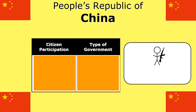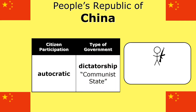First up is the People's Republic of China. China has an autocratic system of government — it's a dictatorship that they call a communist state. It is fairly common for communist countries to have more of an oligarchic system, but China's leader more recently has really taken them toward an autocratic system. We would really consider China autocratic.